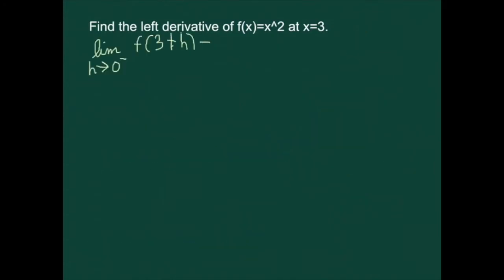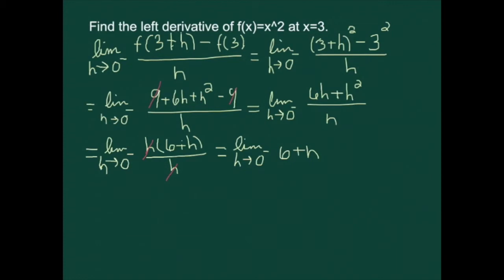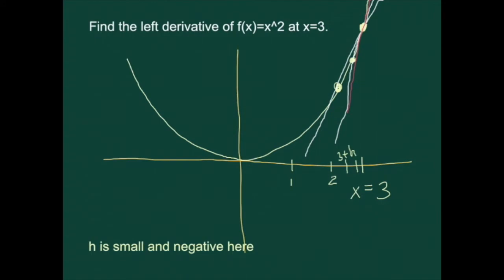Let's calculate it. We're taking the limit of [f(3+h) minus f(3)] divided by h. Plugging into the function: when I plug in 3+h, I get (3+h)². When I plug in 3, I get 3². This gives a 0 over 0 situation, so we foil it out. After the algebra, we have a well-defined limit. As h approaches 0, 6 plus h approaches 6. This 6 is the slope of the tangent line on the graph of x squared at x equals 3. So the left derivative of y equals x squared at x equals 3 is 6.